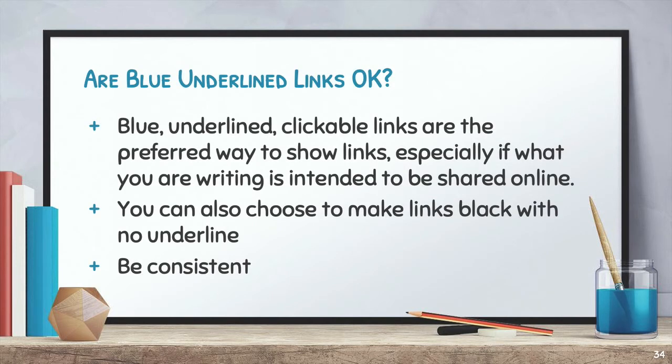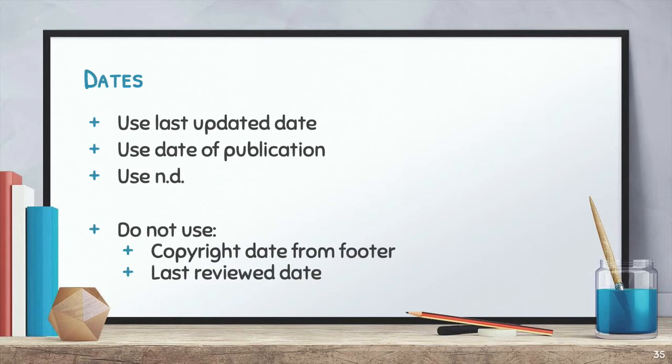How should you show the web addresses? Blue underlined clickable links are the preferred way to show links, especially if what you're writing is intended to be shared online. You can also choose to make links black with no underline. The important thing is to be consistent. For dates, you use the last updated date, or the date of publication, or n.d. if a date of publication or last updated date is not available. You do not use the copyright date from the footer or the last reviewed date. If those are the only dates available to you, use n.d. for the date.